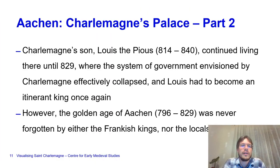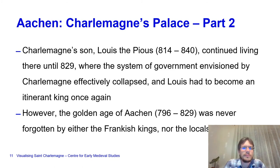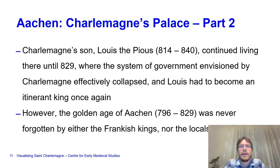What is so important about the palace? Charlemagne's son Louis the Pious continued living there until 829, when the system of government envisioned by Charlemagne effectively collapsed and Louis had to become an itinerant king once again. Louis's sons, courtiers, and aristocrats did not agree with his politics and ousted him. This led to a period of lasting instability, and Aachen and the empire never regained their former glory.